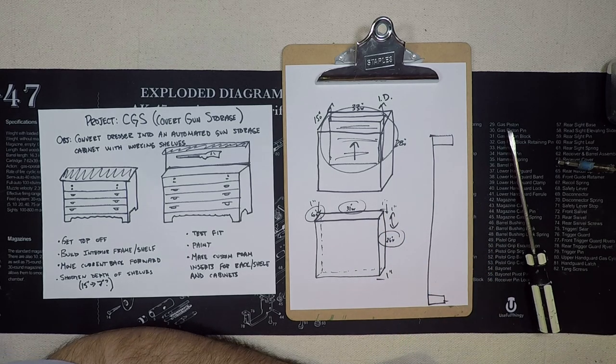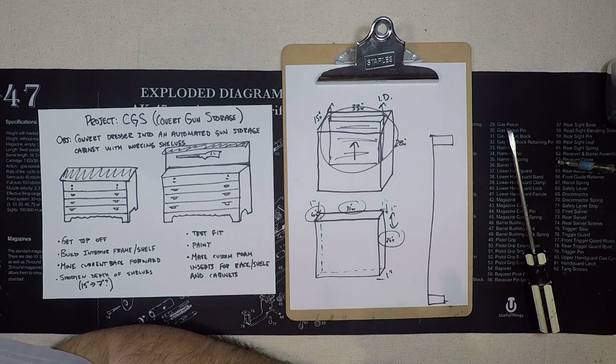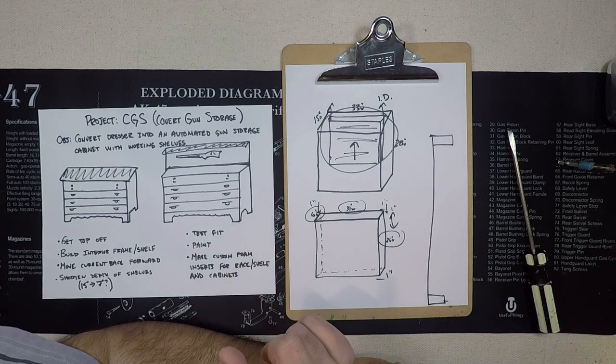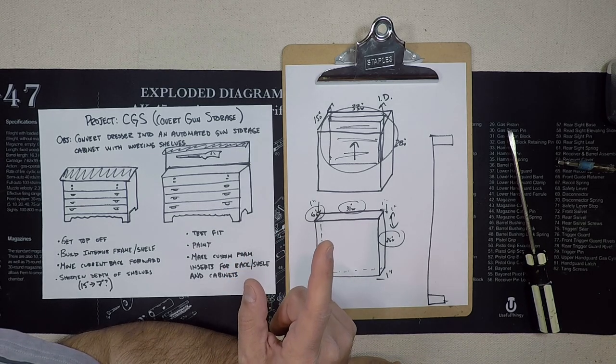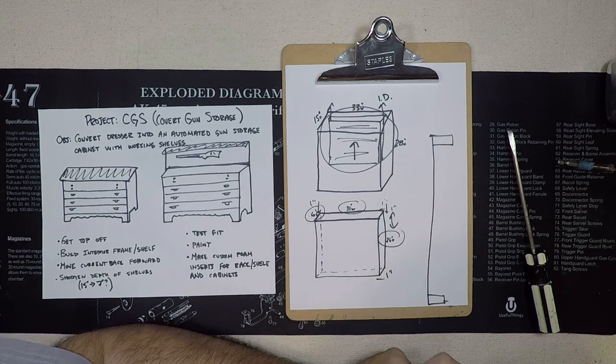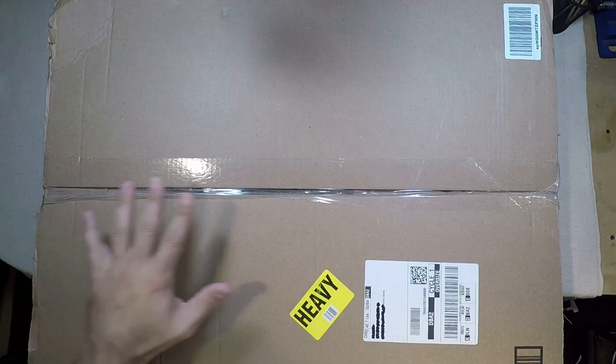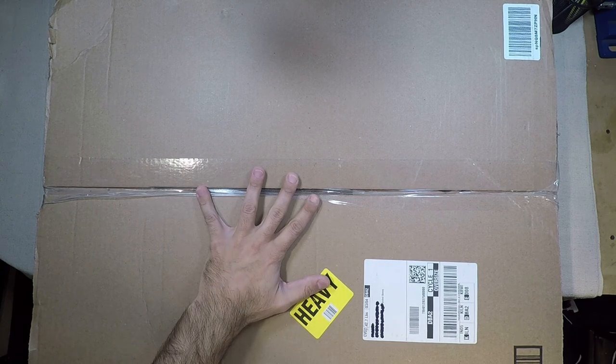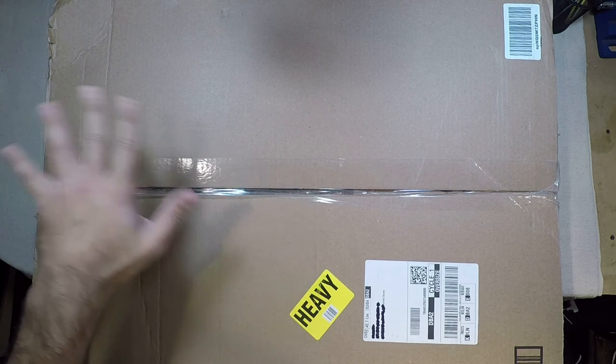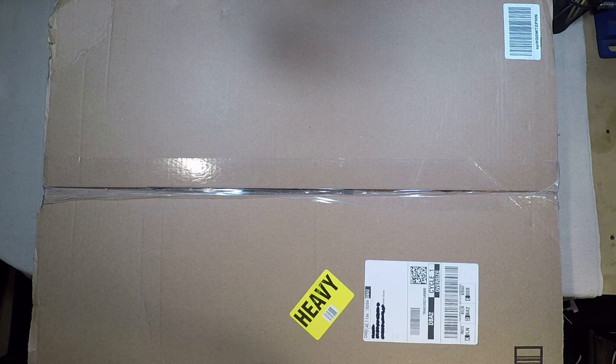What we need to do next is find out what size actuator we're going to use to make this thing go up and down. We have our TV mount actuator that came today, so we're going to open this up and see what we got.